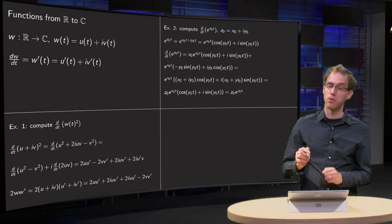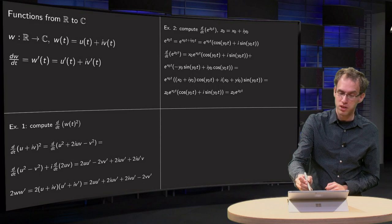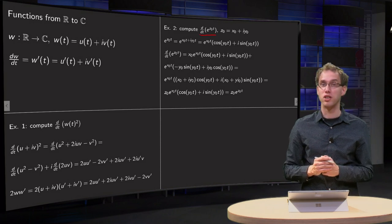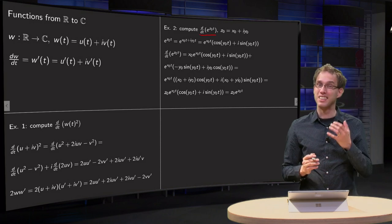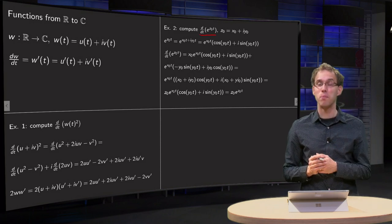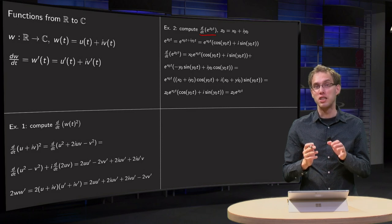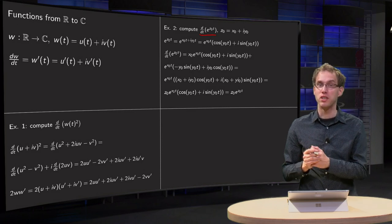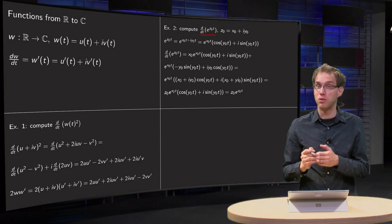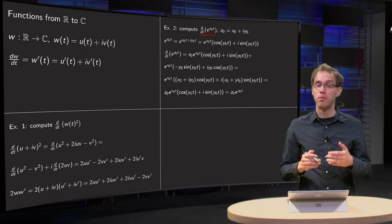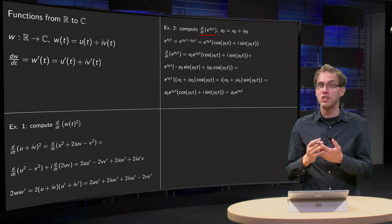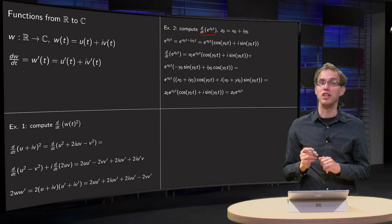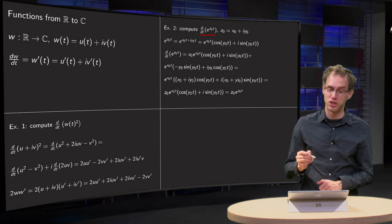Next example: compute the derivative of e to the power z₀·t, where z₀ is in C. You expect to get z₀ times e to the power z₀·t, but you don't know, because we have these rather strange complex functions.